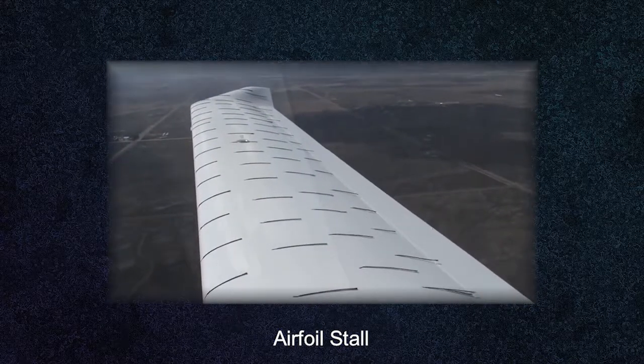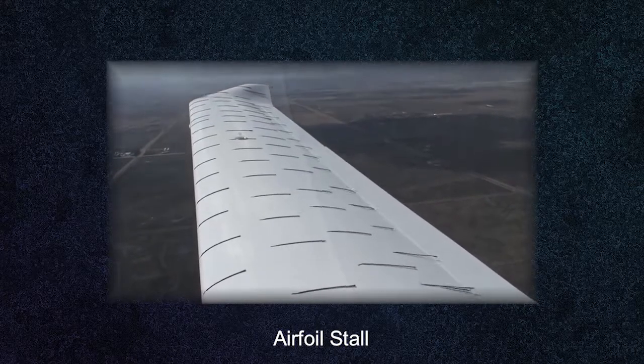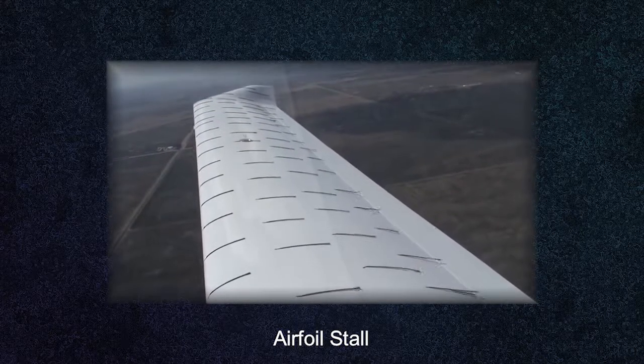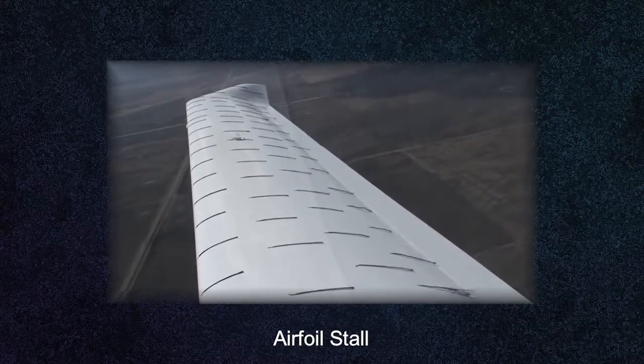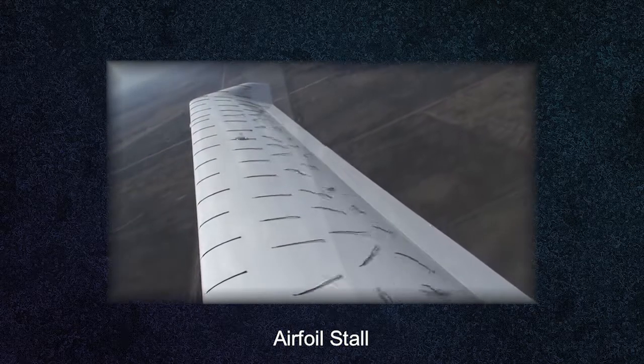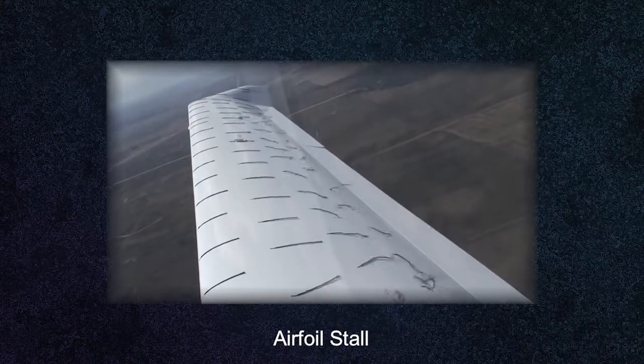Without vortex generators, the flow near the trailing edge of the wing becomes disturbed. This is caused by the flow detaching from the wing, resulting in stall. In response to this, the plane pitches downward.